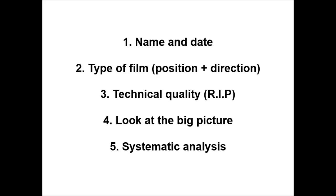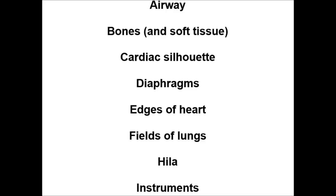4. Look at the big picture and take note of any obvious abnormalities. 5. A systematic analysis using the ABCDEFGHI approach. A: check the airway is central and patent. B: check the bones for fractures or lesions and also check the soft tissues around. C: check that the cardiac silhouette is not abnormally enlarged.